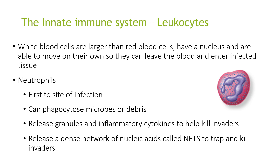White blood cells are larger than red blood cells. They have a nucleus and are able to move on their own, so they can leave the blood into infected tissue. The first type of leukocyte we'll look at is neutrophils, which are the first to arrive at the site of infection. They can phagocytose microbes or debris, release granules and inflammatory cytokines to help kill invaders, and release a dense network of nucleic acids called NETs to trap and kill invaders.